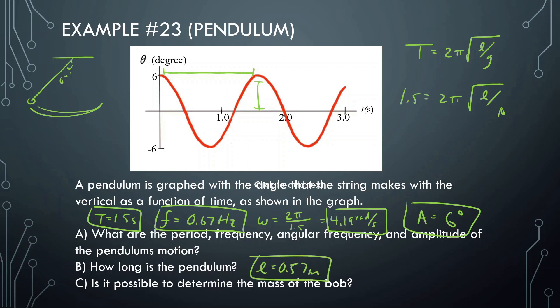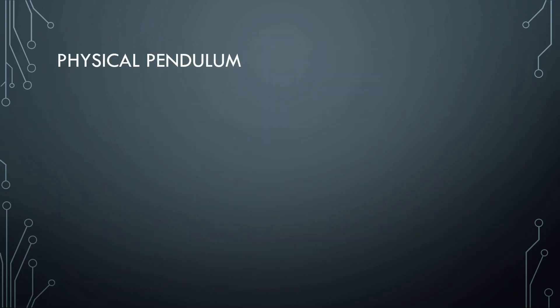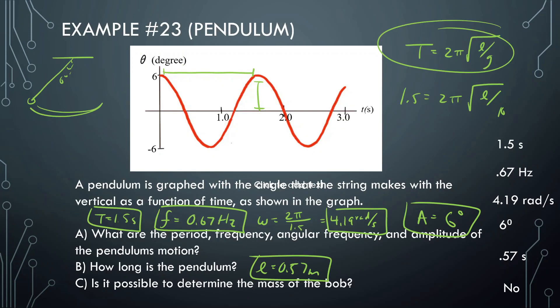Lastly, is it possible to determine the mass of the bob? No, it's not. It's not in the formula. So this graph here shows that no matter what the mass is, whether it's 5 pounds or 5 billion pounds, it's going to be swinging the same amount. So no, it's not going to help at all.